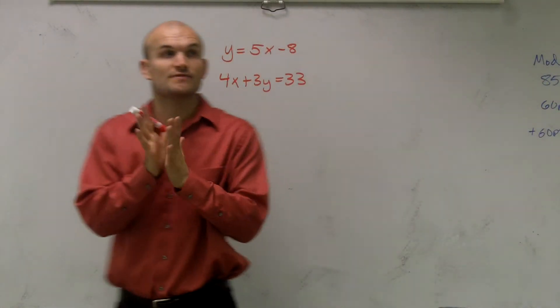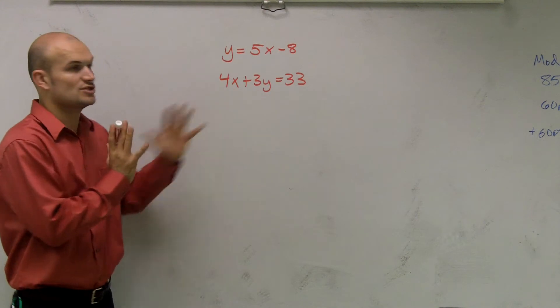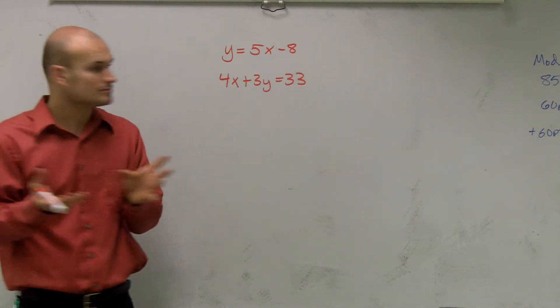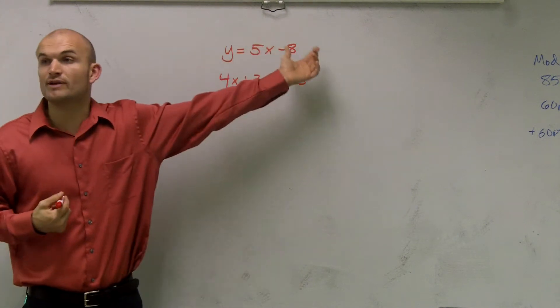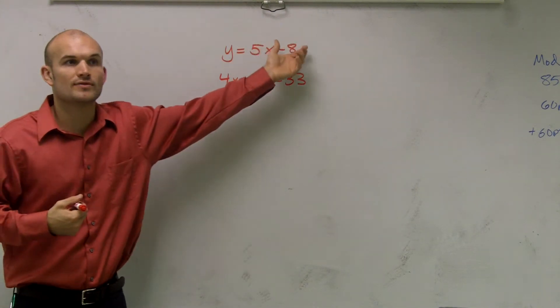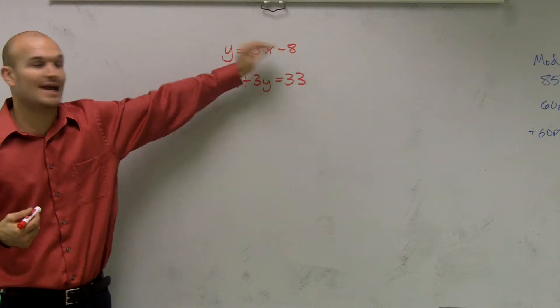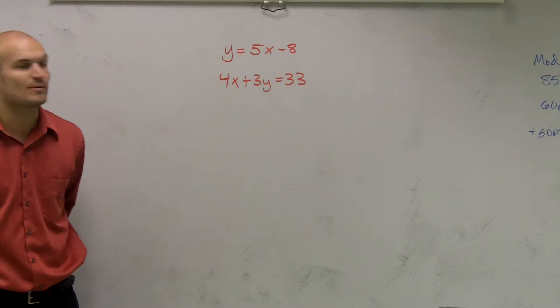So what I want to do is show you guys how to solve this one by substitution. So to solve by substitution, remember, what we're going to do is substitute the value of one variable into that other variable in another equation. So here we have two separate equations. We have y equals 5x minus 8. And here we have 4x plus 3y equals 33.